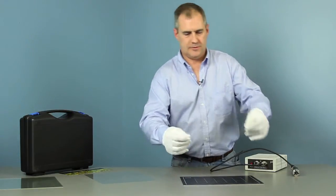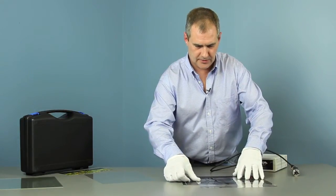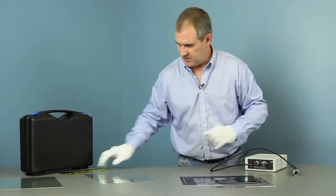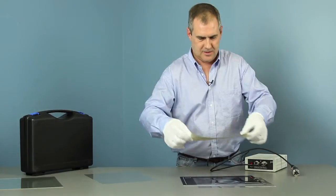Take a piece of, this is 2 mil polyester, lay it down on the grid, which also comes with it. We're going to encapsulate this label.